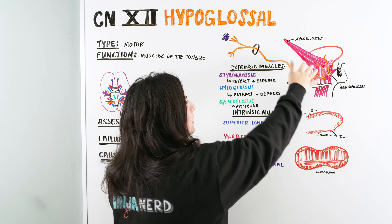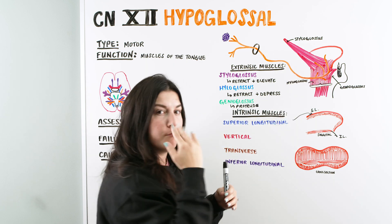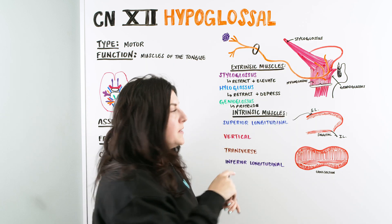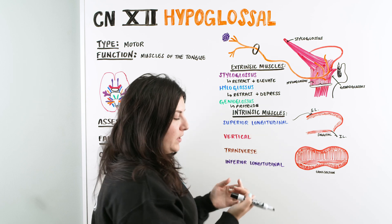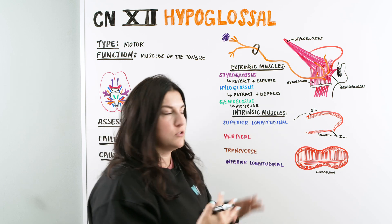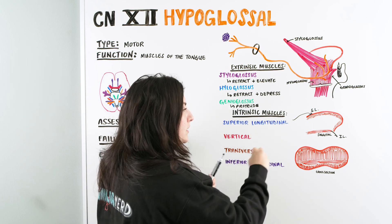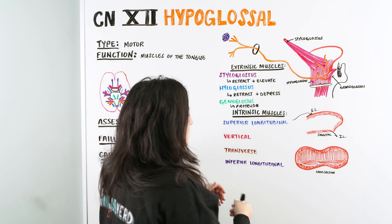And how that helps the tongue move. Because combining the movement of the tongue as a whole, and then the movement of the tongue within itself, is allowing us to do lots of things, right? Like speak, swallow. So all of those muscles are really important, helping with the hypoglossal nerve.